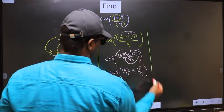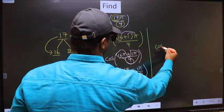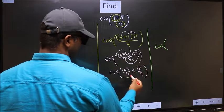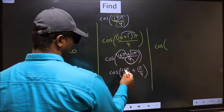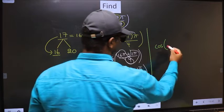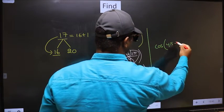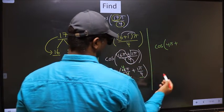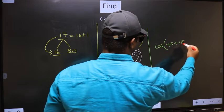That is 16 pi by 4 plus 1 pi by 4. Next. Cos. Now here you should cancel, 4 ones, 4 fours. So we get 4 pi plus this no change, 1 pi by 4.